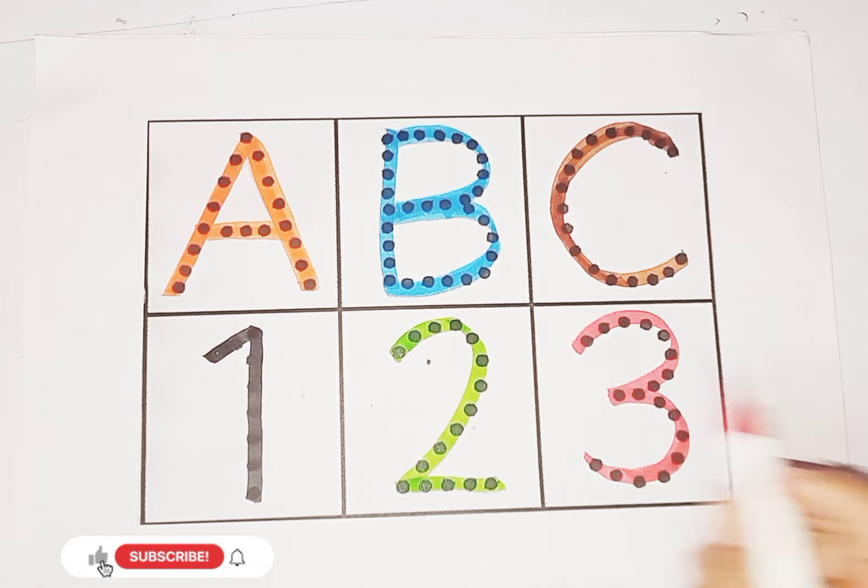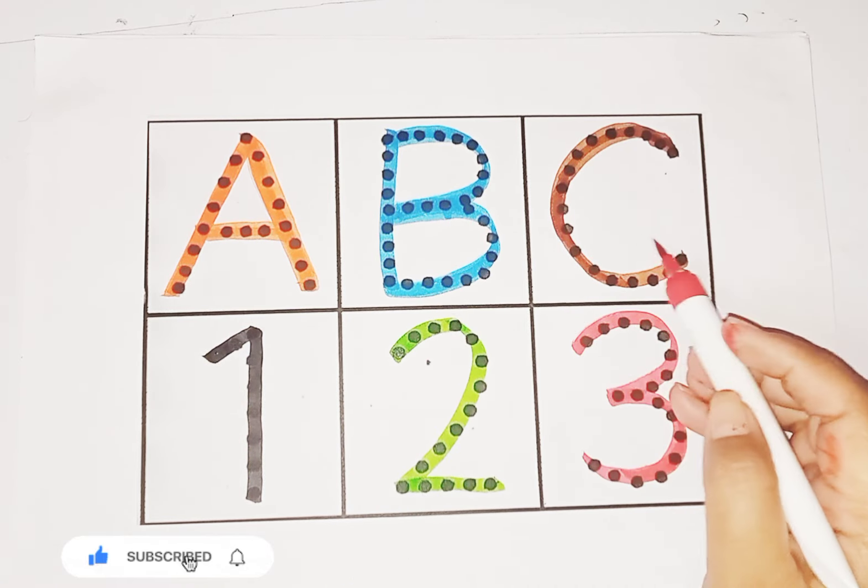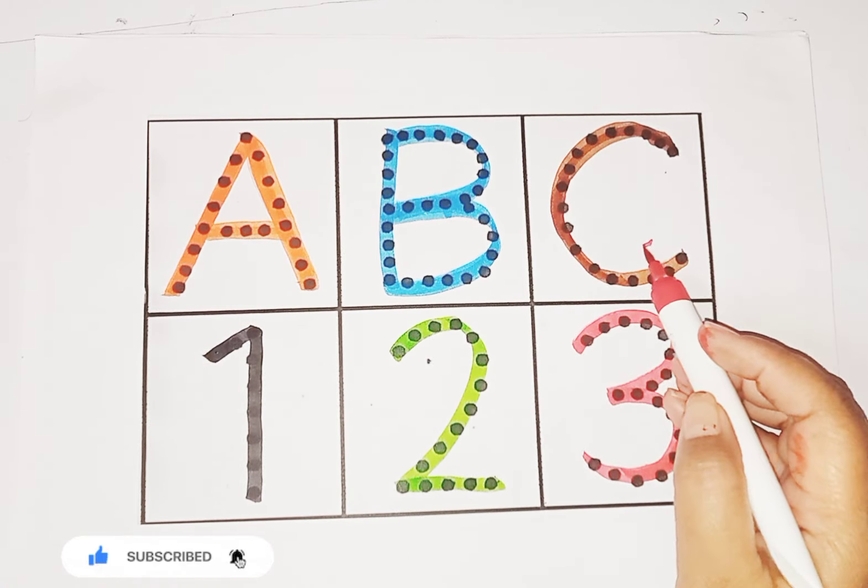So kids, today we learn alphabets and number. Alphabet A, B, C. And number 1, 2, 3.